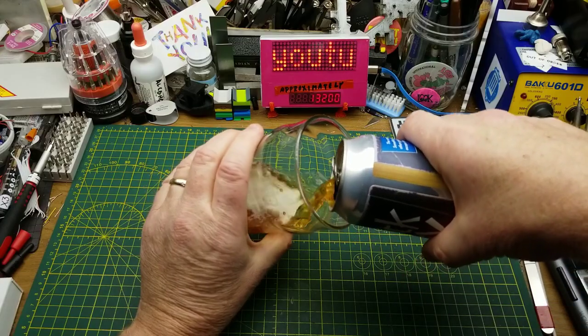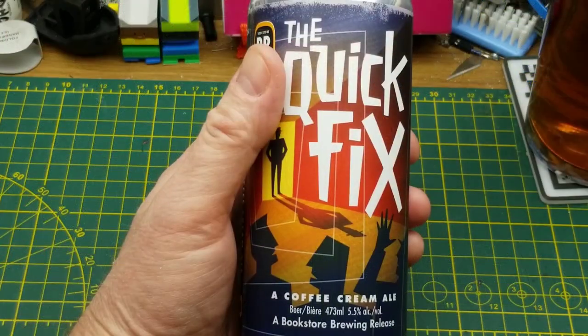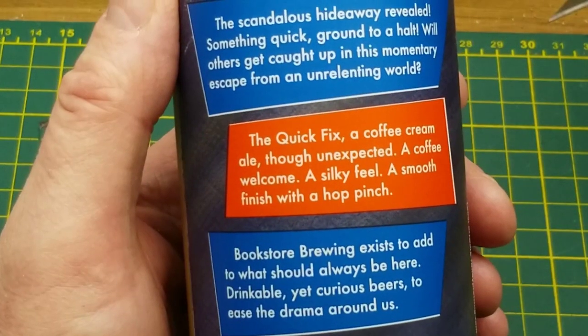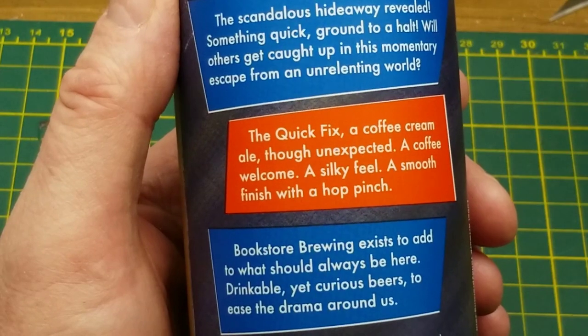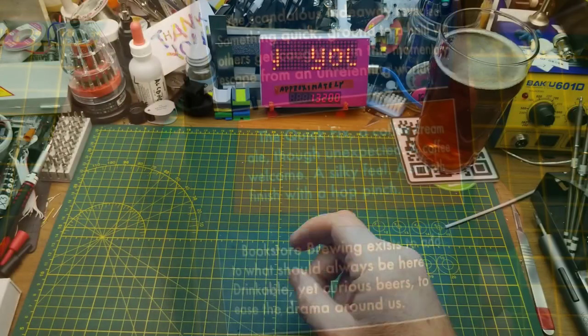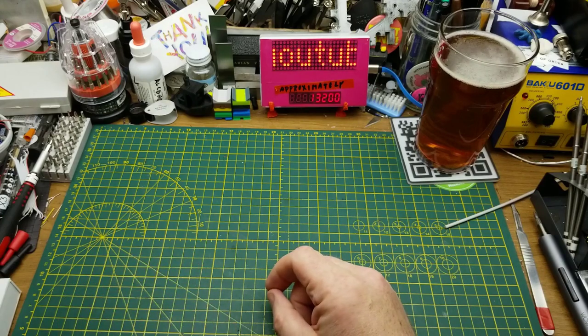Tonight's tinkering is accompanied by the Quick Fix Coffee Cream Ale from Bookstore Brewing. Fairly simple tasting notes on this one: a coffee welcome, a silky feel, a smooth finish with a hoppy pinch. So tonight I'm going to look at a circuit that I found on Reddit a few weeks ago.